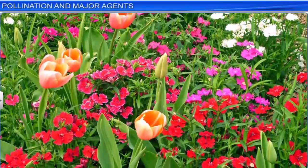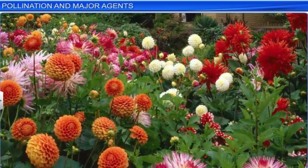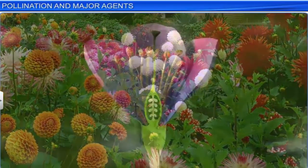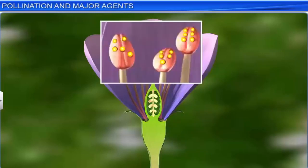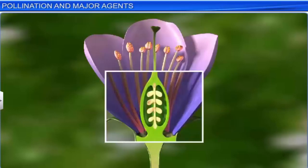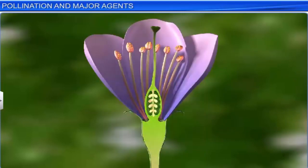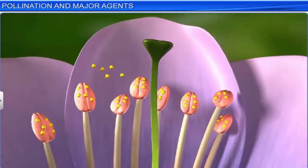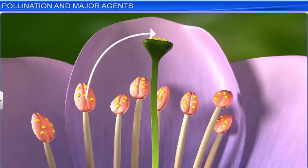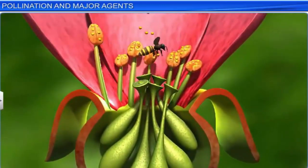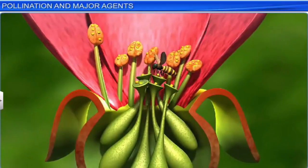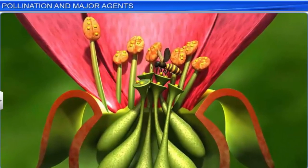Flowers are mainly responsible for bringing about fertilization and seed formation. To facilitate fertilization, it is necessary that the male gametes inside the pollen grains and the female gamete inside the ovule are brought together. However, since the gametes are immotile, pollen grains have to be transferred to the stigma. This process of transfer of pollen to the stigma of a flower — brought about by agents such as insects, wind, and water — is called pollination.